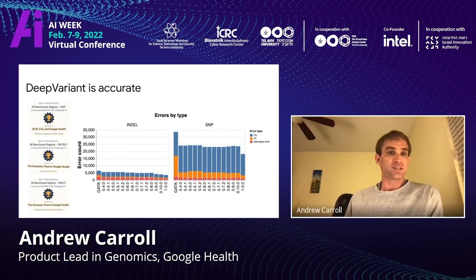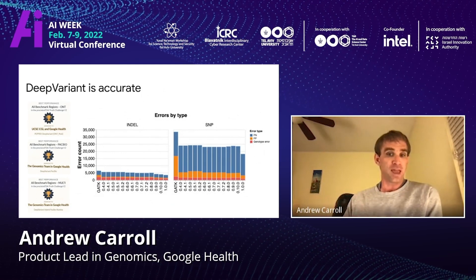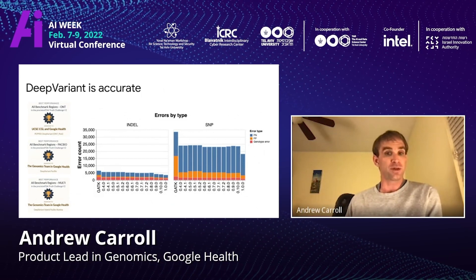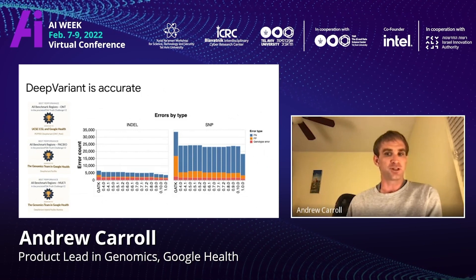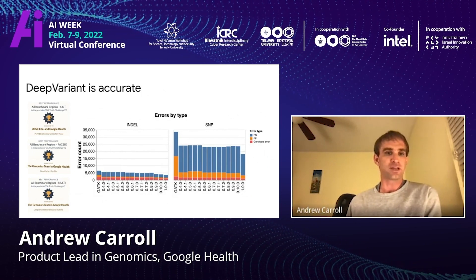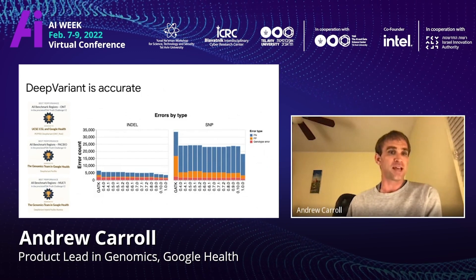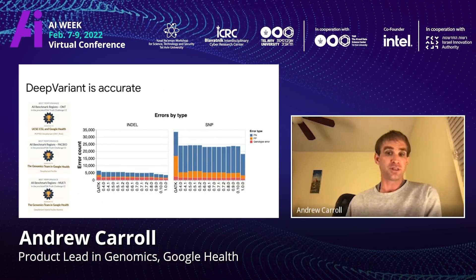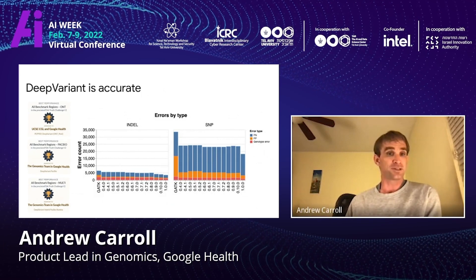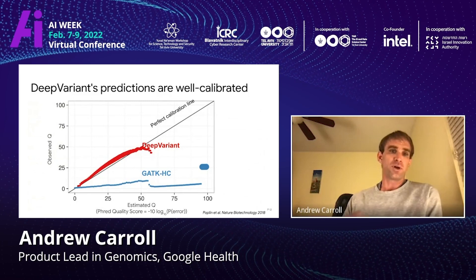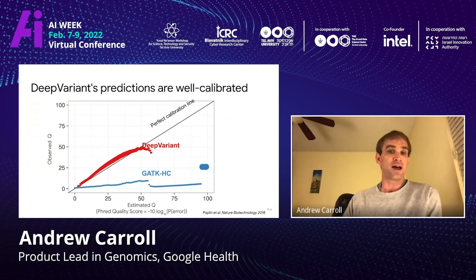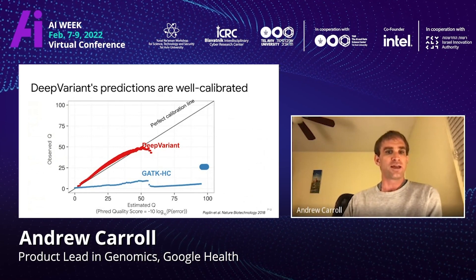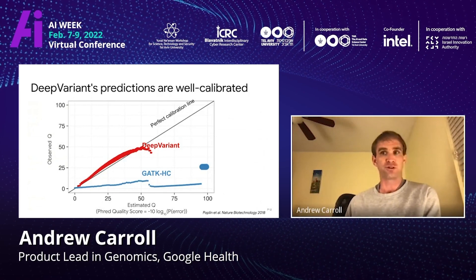The upside of DeepVariant is that it's very accurate. I'm showing the number of errors for DeepVariant relative to the state-of-the-art method GATK — there's a substantial error reduction. DeepVariant has won a number of awards in various FDA challenges, specifically precisionFDA, winning multiple best accuracy awards for different instrument technologies. Furthermore, the output probabilities are quite well calibrated, so not only does DeepVariant have higher accuracy, it's also quite good at understanding when it's going to make an error, which is very useful for downstream filtering.